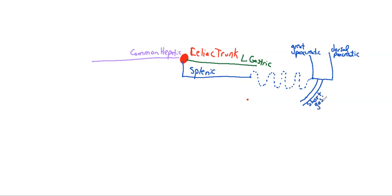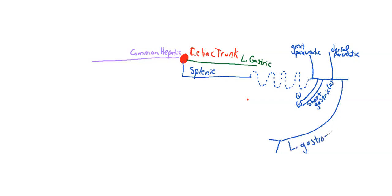Those pancreatic branches are going to be called the great pancreatic artery and the dorsal pancreatic artery. I'm also going to have short branches traveling down towards the fundus of the stomach — these are my short gastric arteries, typically two of them though there can sometimes be more. The other branch coming off is a longer branch that forms a nice anastomosis, and this is going to be my left gastro-omental. Those are the big branches off the splenic artery, which then has several terminal branches to the spleen.